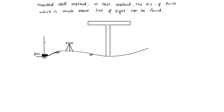This is the line of sight. Suppose this reading is h1, and we need to find the RL of point which is at the bottom of the slab.